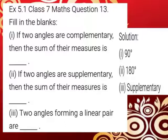Question number 13: Fill in the blanks. First subdivision: If two angles are complementary, then the sum of their measures is 90 degrees — whenever two angles are complementary, their sum is 90 degrees. Second subdivision: If two angles are supplementary, then the sum of their measures is 180 degrees, since when two supplementary angles are added we get 180 degrees.